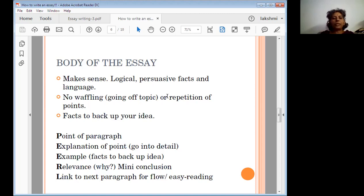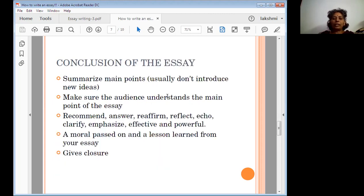PEER. The first P returns the point of paragraph. Next one is explanation of the point, it means go into the detail. Example: few examples we have to give, facts to back up idea. Relevance: how much of that particular point is relevant to the present situation or observation? Mini conclusion, link to next paragraph for flow or easy reading.